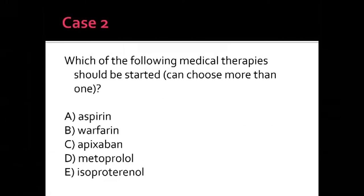A poll asked which medical therapy should be started. Most chose apixaban, but the correct answer is warfarin. This patient has mitral stenosis with atrial fibrillation. In rheumatic mitral stenosis with AFib, long-term vitamin K antagonist anticoagulation is specifically indicated — DOACs are not recommended in this setting.